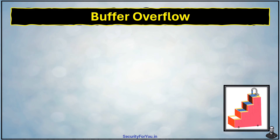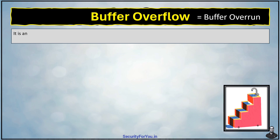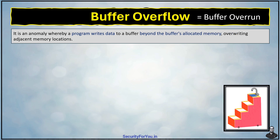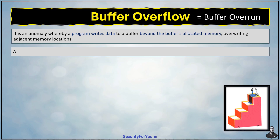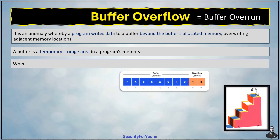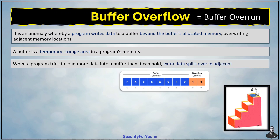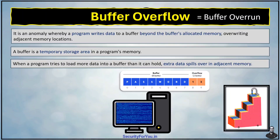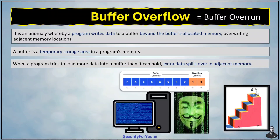What is buffer overflow? In programming and information security, a buffer overflow or buffer overrun is an anomaly whereby a program writes data to a buffer beyond the buffer's allocated memory, overwriting adjacent memory locations. A buffer is a temporary storage area in any program's memory. When a program tries to load more data into a buffer than it can hold, that extra data spills over into adjacent memory locations, which can lead to unexpected behaviors like crashing the system or allowing attackers to gain control of the system.